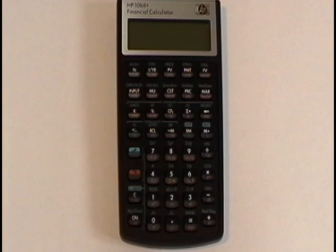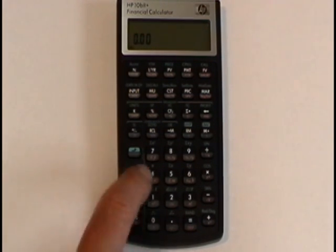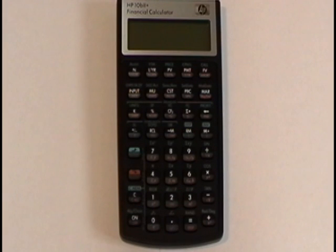So to turn the calculator on, the on button's right here. Just do that. And to turn it off, you see how it says in gold or orange, off. I press gold key and then off to turn it off.